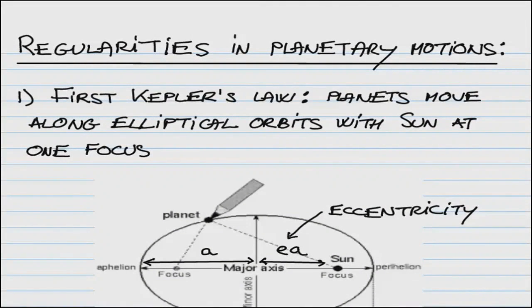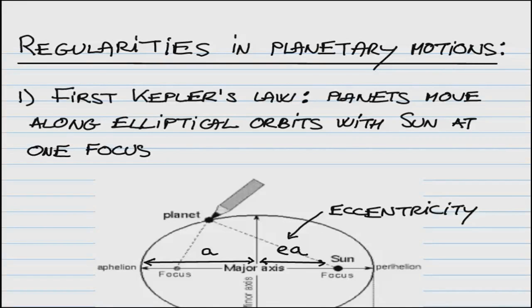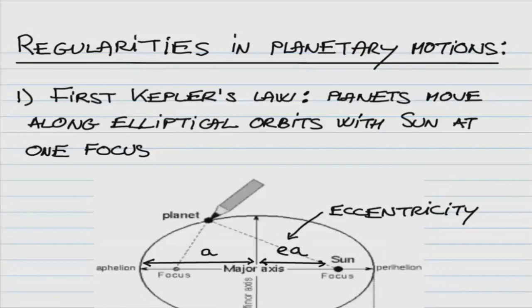Last time we did a quick survey of the solar system just to see what is ahead for us. Today I want to look first at some of the regularities in the planetary motions. The three most important ones were discovered by Johannes Kepler in the early 1600s, formulated in his three laws of planetary motion.